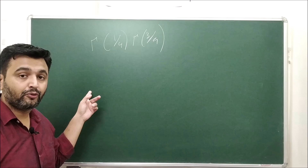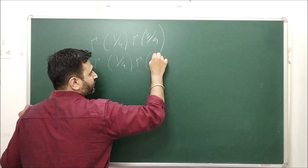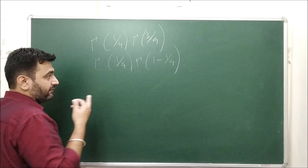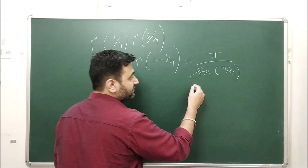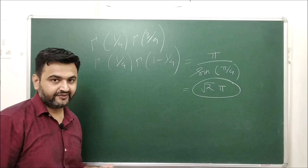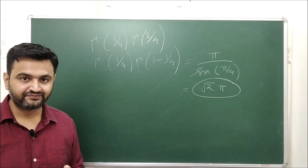Suppose the question involves a product of gamma functions: Γ(1/4) · Γ(3/4). Check whether the inputs add up to 1: 1/4 + 3/4 = 1. So this is Γ(1/4) · Γ(1 − 1/4), and by the reflection formula Γ(α)·Γ(1−α) = π/sin(απ) with α = 1/4, we get π / sin(π/4) = π / (1/√2) = √2 · π. If you know these properties, answers come in two lines. That's why these properties and the gamma function are so important.